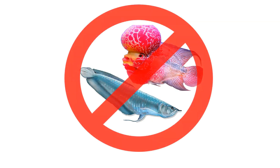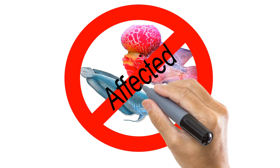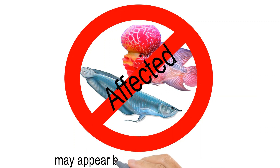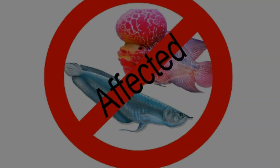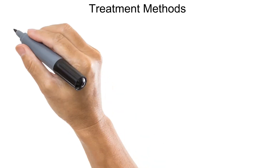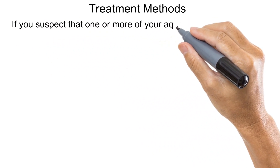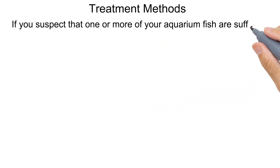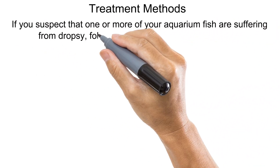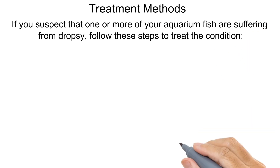If your fish is affected, it may appear bloated and stop eating. If you suspect that one or more of your aquarium fish are suffering from dropsy, follow these steps to treat the condition.